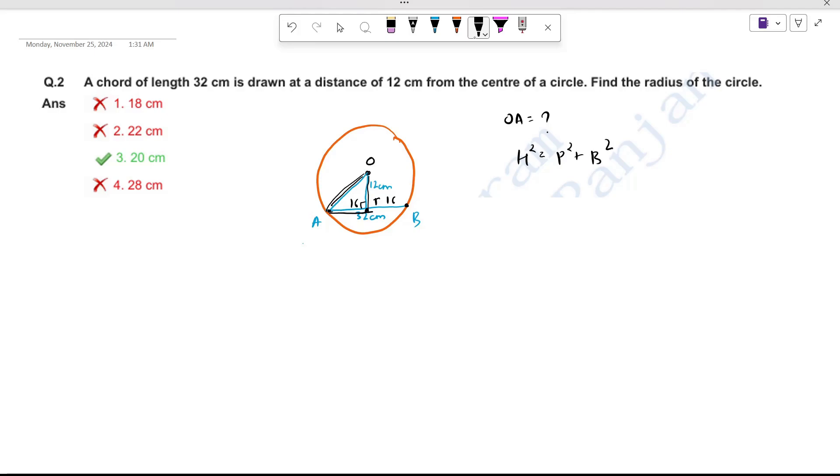The hypotenuse will be OA. OA square equals OT square plus TA square. That will be 12 square plus 16 square. Here is 144, 16 square is 256. So you get 400.